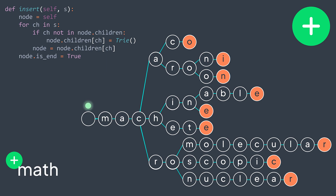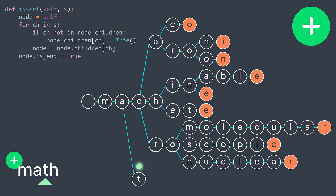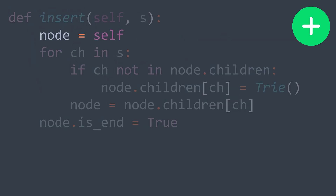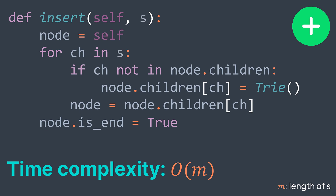Let's insert another string: 'math'. M — we have the node. A — we have the node. T — we don't, so we create it and go to it. H — same thing, we create it and go. We finish traversing and set isEnd to true. In code, we create a node that starts on the root — self represents the object itself. This method has O(m) time complexity, where m is the length of the string to insert.